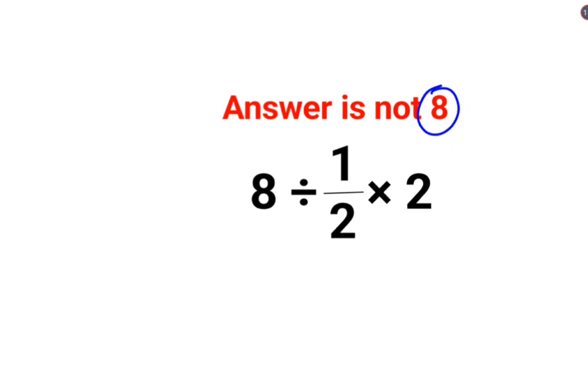Here a lot of people think that the answer for this question is supposed to be 8. That is incorrect. The reason for that is, a lot of people think that this is 8 divided by 1 by 2 multiplied by 2, and this gets cancelled. So you get 8 divided by 1. The answer is 8.